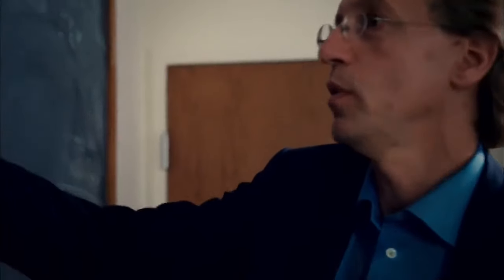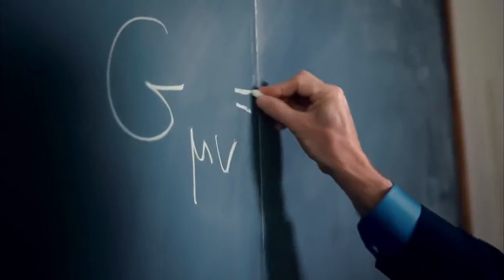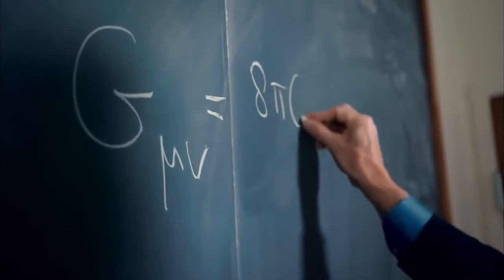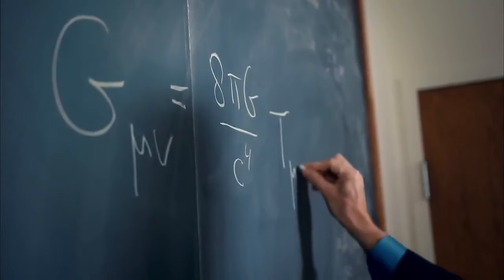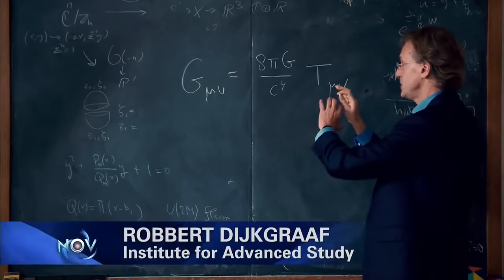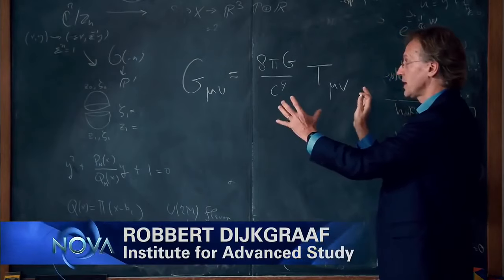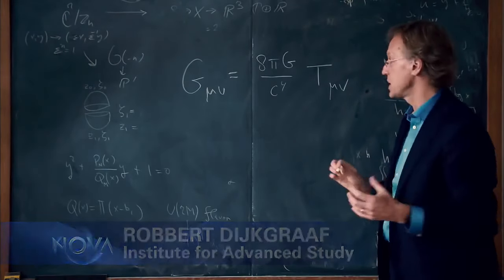So the formula is really simple. G for the shape of space-time and T for the distribution of mass and energy. This very simple formula captures all of Einstein's General Relativity.